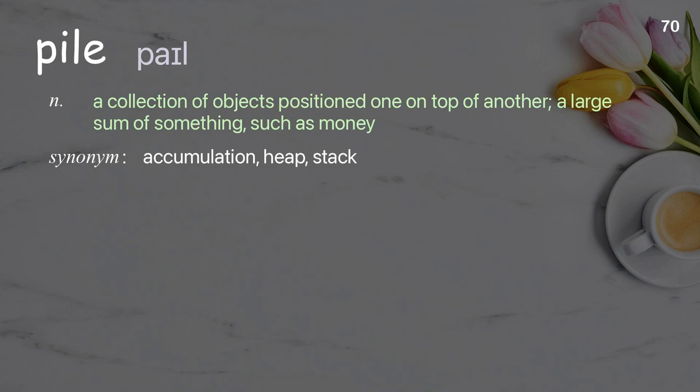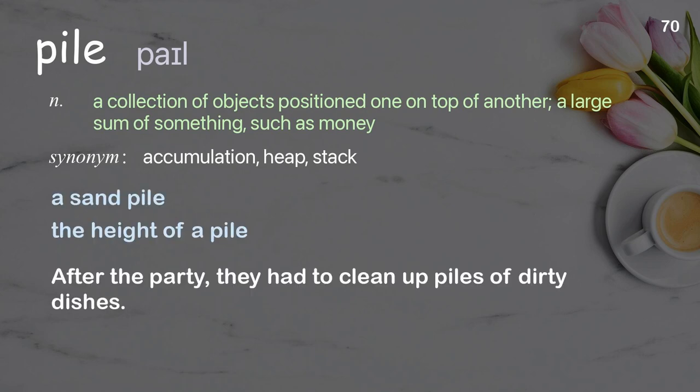Pile: A collection of objects positioned one on top of another; a large sum of something, such as money. Examples: A sand pile, the height of a pile. After the party, they had to clean up piles of dirty dishes.